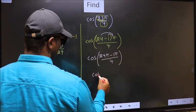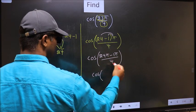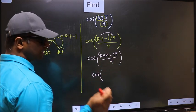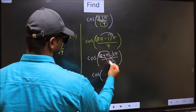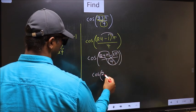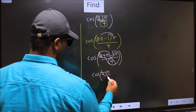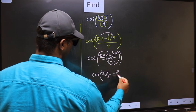Now cos. In this, you should split the denominator in this way: 24π by 4 minus 1π by 4.